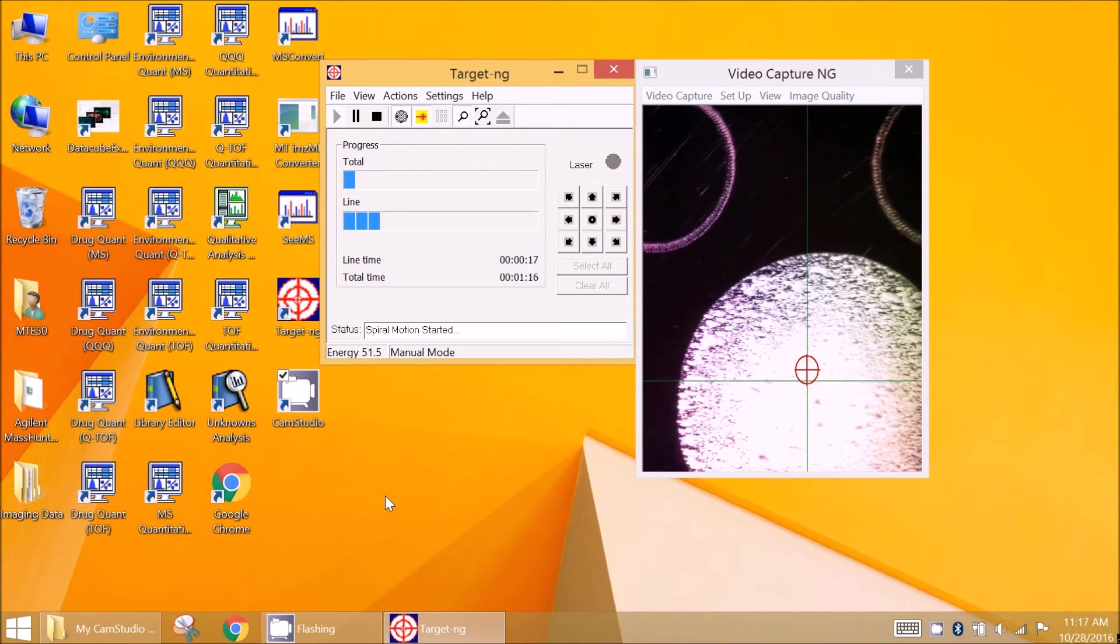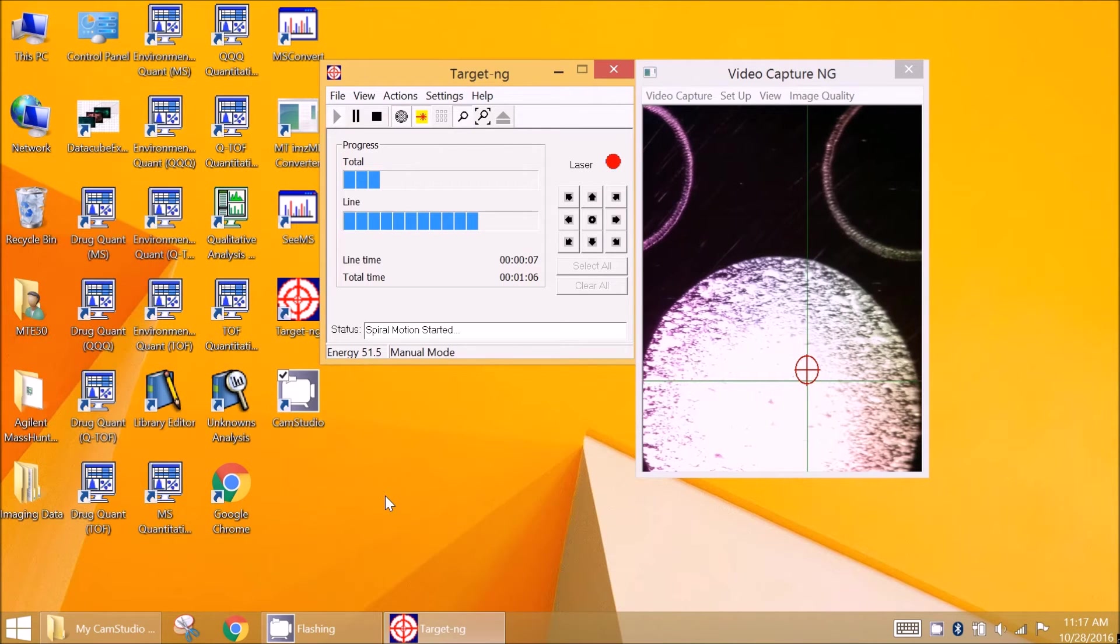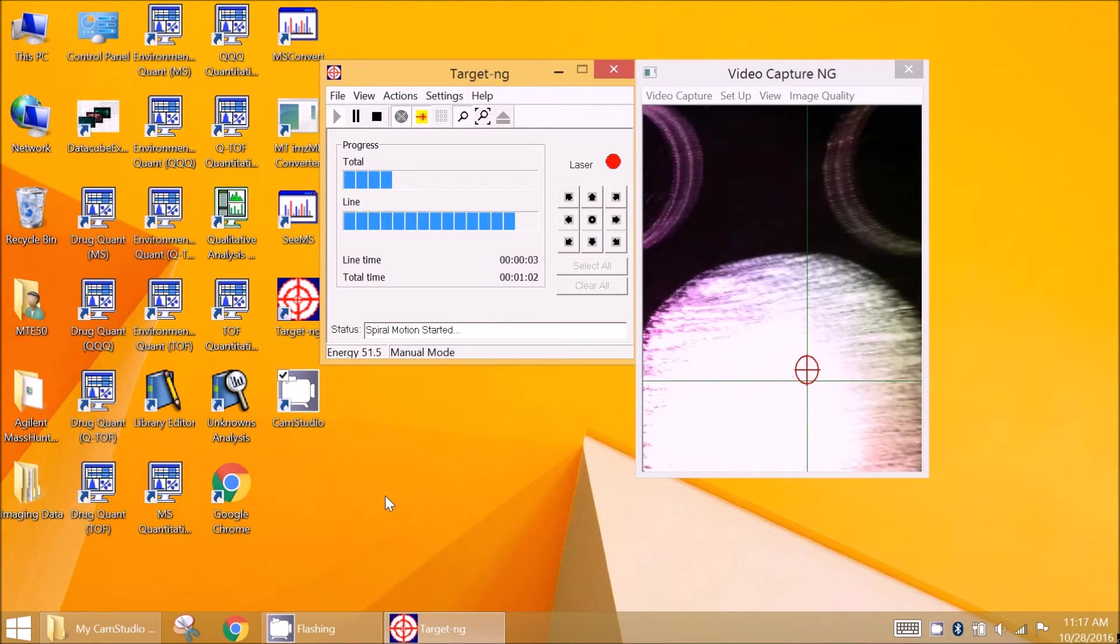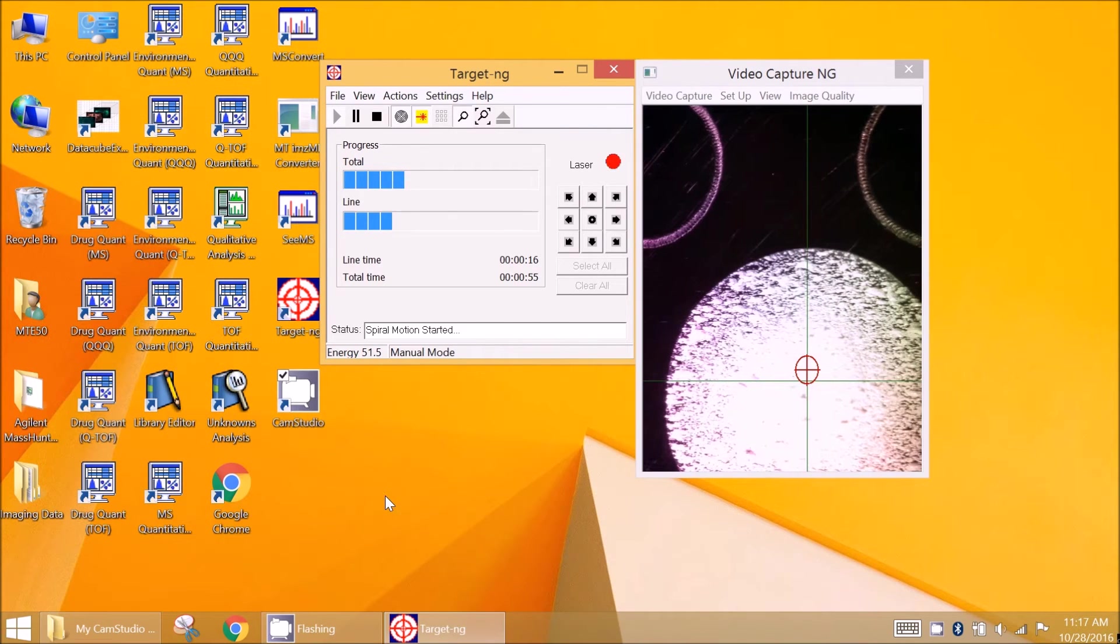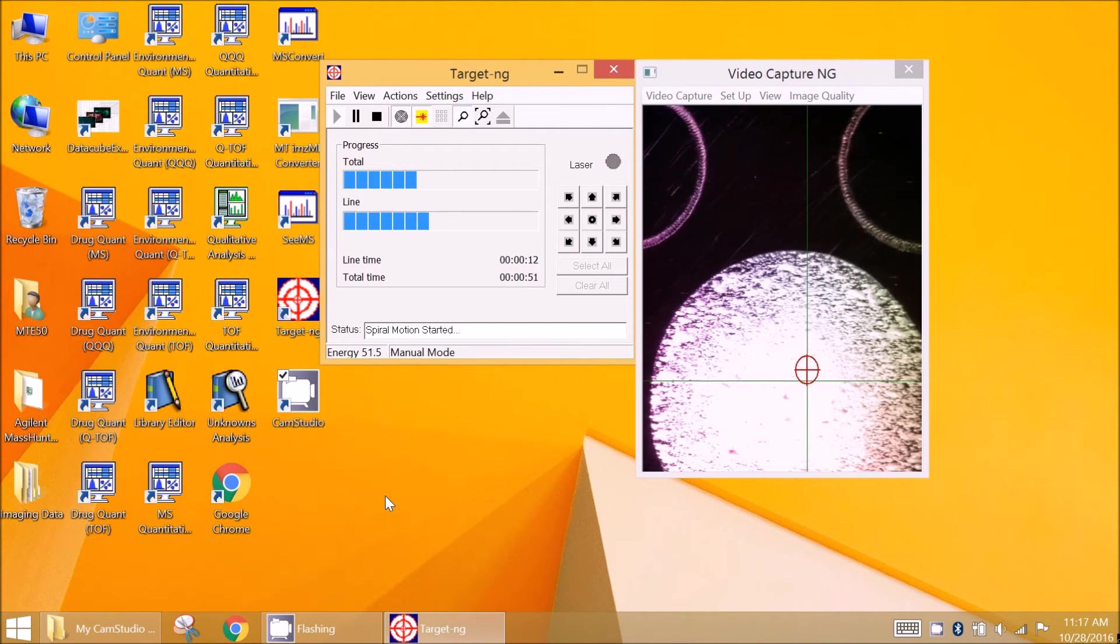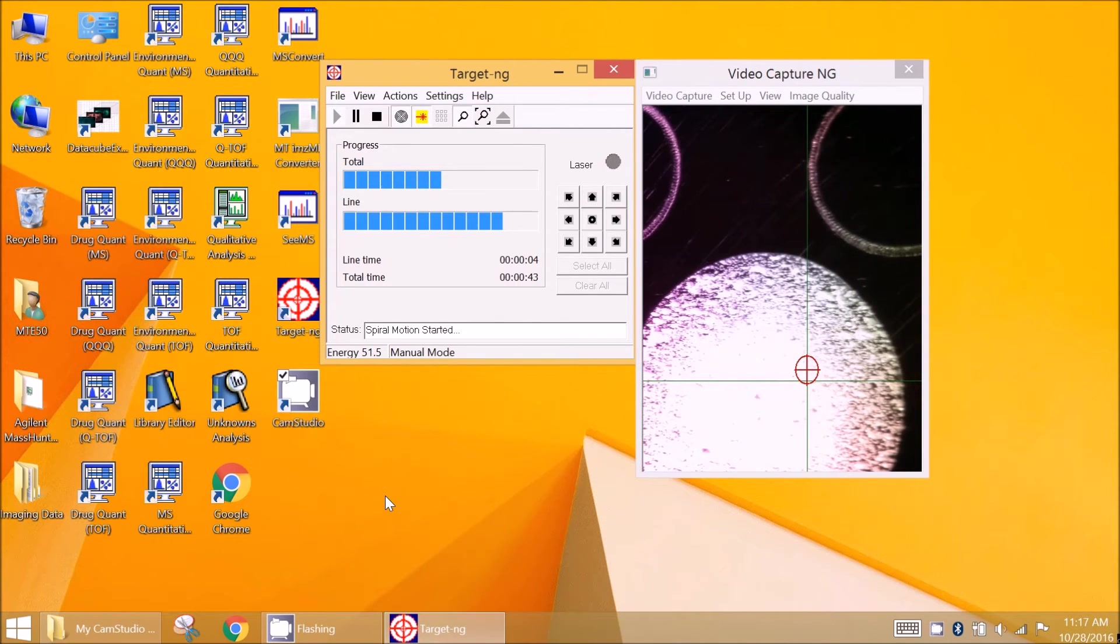In pattern MS image acquisition mode, the imaging experiment parameters are set up first, including the scanned areas. The acquisition is started similar to the spot analysis mode by clicking on the start button. The laser firing stops automatically after the pattern was fully scanned.